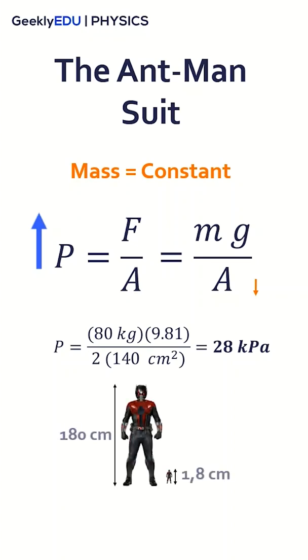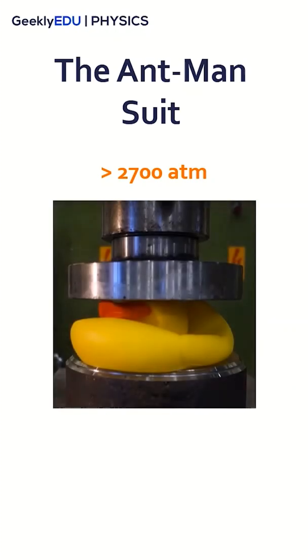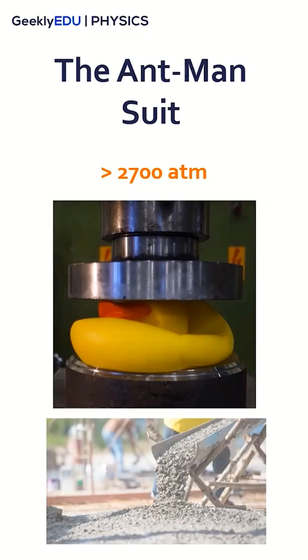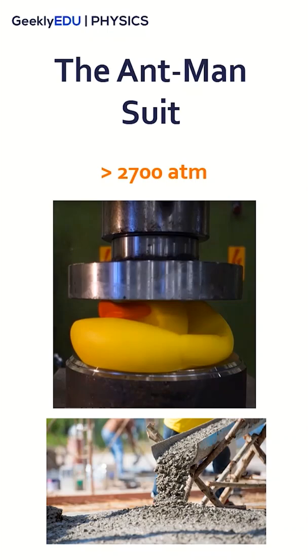Now, if Ant-Man's suit reduces his size 100 times, the pressure increases to 280 megapascals. This pressure is higher than 2700 atmospheres. It's also higher than any of those hydraulic pressures or most of the concrete structures capable of supporting him standing.